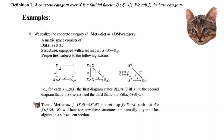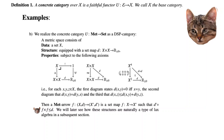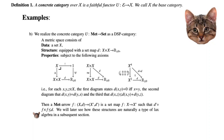A metric space arrow is a set map that is non-expansive, meaning d-prime composed pre-composed by f×f is less than or equal to d. We will see how these structures are naturally a type of lax algebra in a subsequent section.